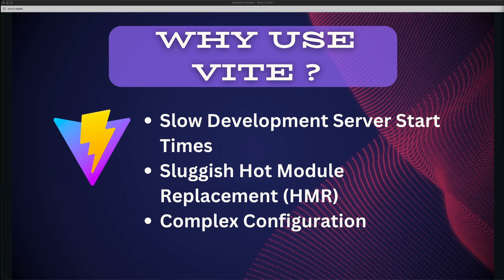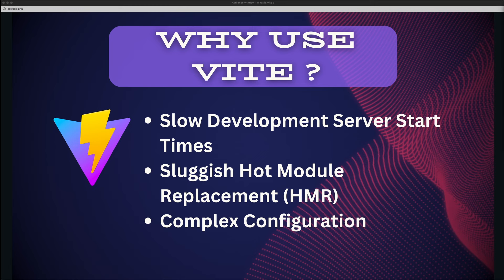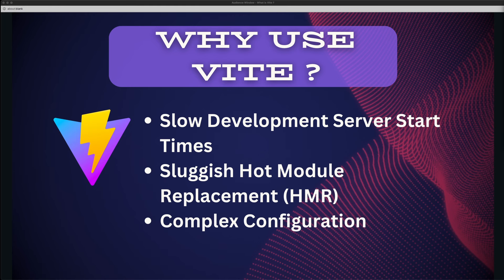The solution for this: Vite starts the development server instantly, serving source files directly as native ES6 modules. This approach eliminates the need for bundling during the development process, which means drastically reducing the startup time. Regarding sluggish Hot Module Replacement (HMR): HMR allows developers to see changes in their code without fully refreshing the page. However, traditional tools often have slow HMR performance, especially in large projects, leading to long waiting times after making any kind of changes. Vite's solution is to provide lightning-fast HMR by only updating the specific modules that have changed, ensuring that updates are instant and enhancing the feedback loop and developer productivity.